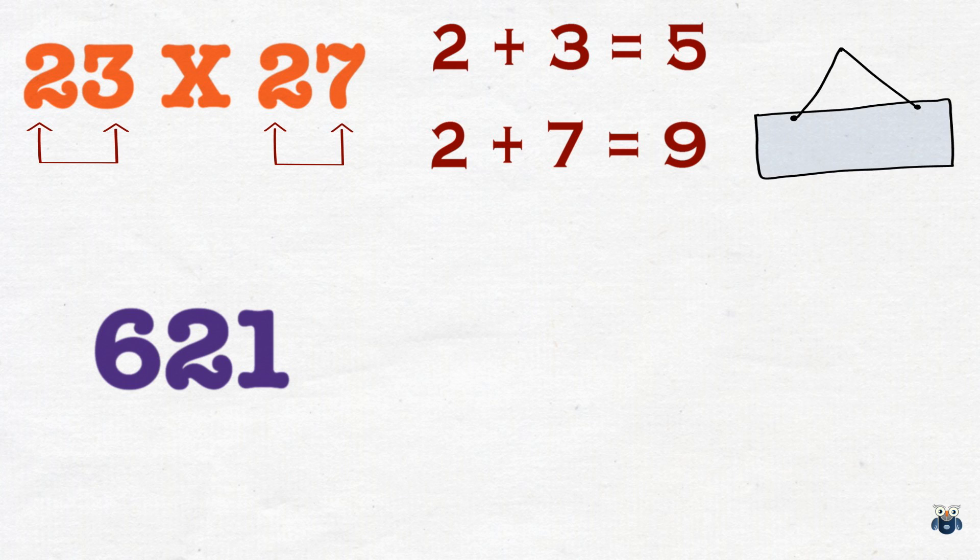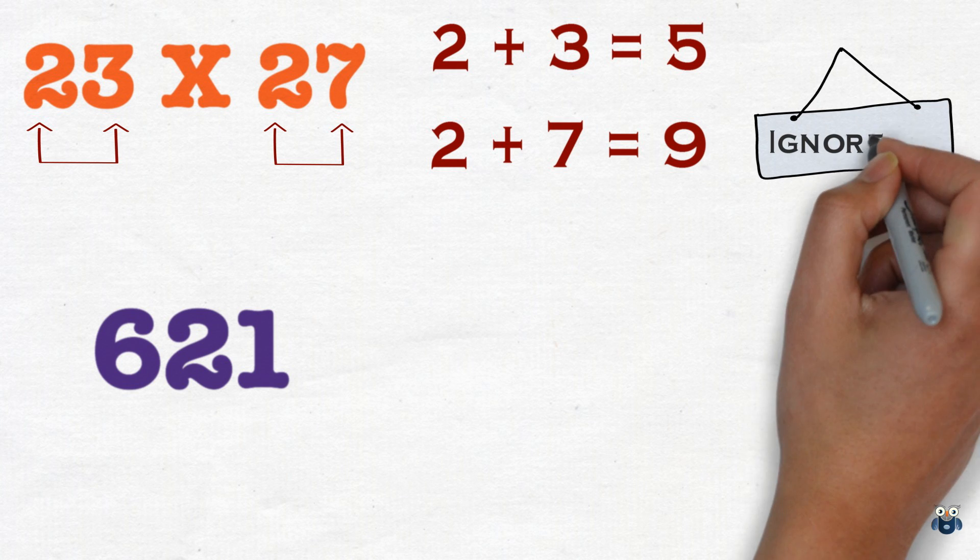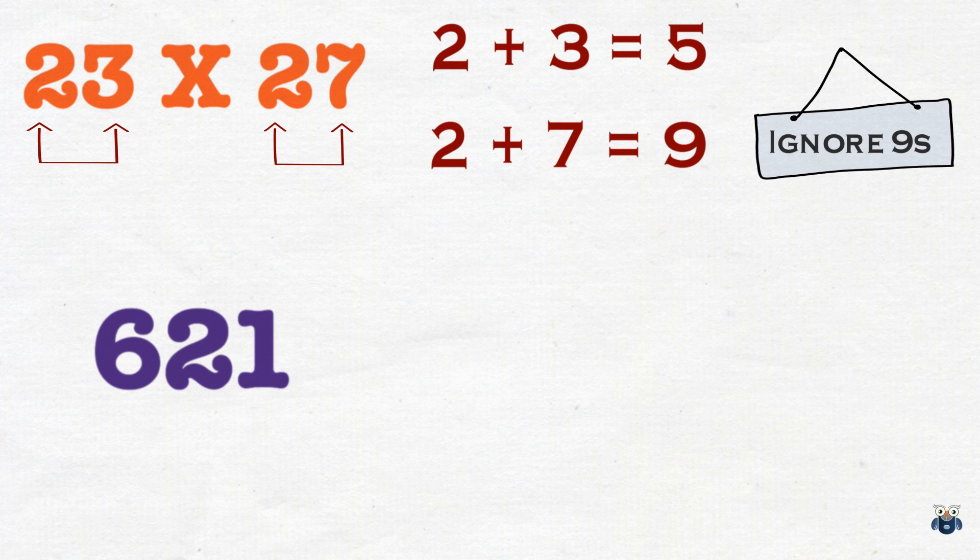Now, here is the first thing to keep in mind. We ignore nines. So, when you see a 9, replace it with 0. So, after applying this logic, 23 and 27, we get 5 and 0.